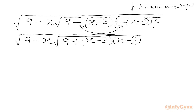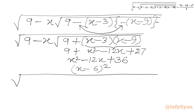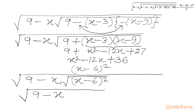Now we will multiply x minus 3 times x minus 9 first. So we write x squared minus 9x minus 3x, giving minus 12x, and minus 3 times minus 9 gives plus 27. Adding 9 and 27 gives 36, so we have x squared minus 12x plus 36, which is again a perfect square of x minus 6. So we write square root of x minus 6 whole squared. Now square root of a squared is mod a, so we write square root of 9 minus x times mod of x minus 6. This is our LHS.